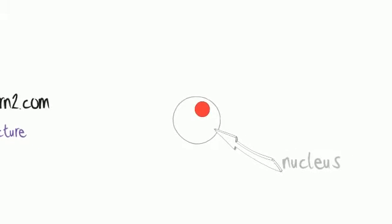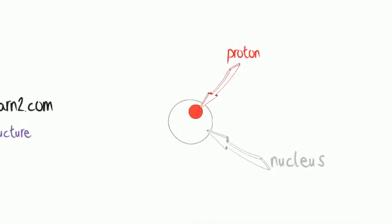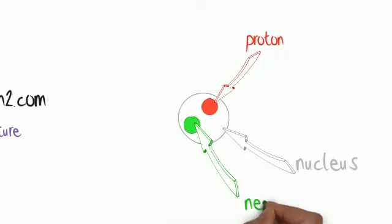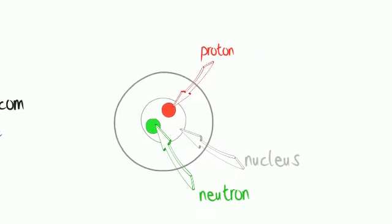Inside an atom is the nucleus, and inside the nucleus are protons and neutrons. Orbiting around the nucleus, rather like the earth orbits the sun, are electrons. These are in energy levels or shells.